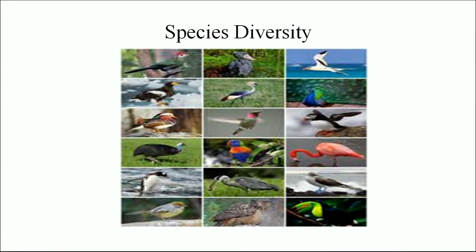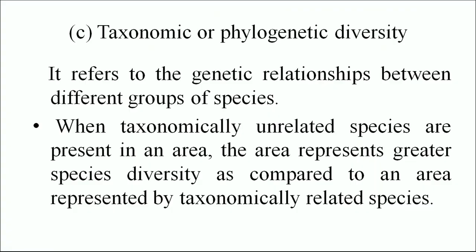You can see in the diagram the diversity among bird species. Taxonomic or phylogenetic diversity refers to the genetic relationship between different groups of species. When taxonomically unrelated species are present in an area, that area represents greater species diversity as compared to an area represented by taxonomically related species.